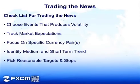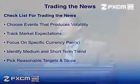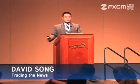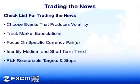What is my checklist for trading the news? When we're looking at a lot of these event risks, from the major industrialized countries we have anywhere between 100 to 160 event risks on a week-by-week basis. The first step we should be taking is choosing the event that produces the volatility, and we want to track the market expectations - we want to know what numbers the markets are looking for. We also want to focus on specific currency pairs that tend to show the best reaction, and identify medium and short-term trends, as well as pick reasonable targets and stops.